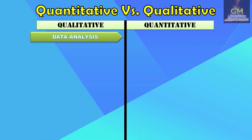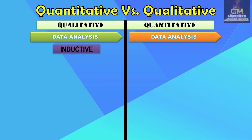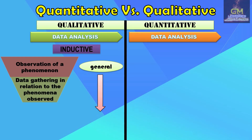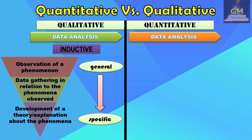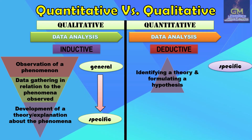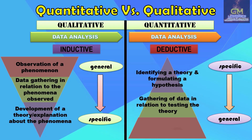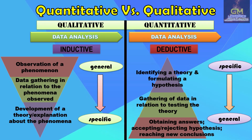To further explain data analysis: in qualitative research, it uses an inductive method — we start with a general premise such as observation of a general phenomenon, narrow it down through data gathering in relation to the observed phenomena, and finally come up with something specific such as the development of a specific theory or explanation. Whereas in quantitative research, it uses the deductive method — we start with something specific such as identifying a theory and formulating a hypothesis, then gather data to test the theory, and finally come up with something general such as obtaining answers, accepting or rejecting the hypothesis, and reaching new conclusions.